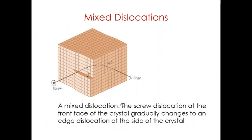Next we will discuss mixed dislocations. As shown in the figure, the screw dislocation Burgers vector is parallel to the screw dislocation line, while the Burgers vector for the edge dislocation is perpendicular to the extra half-plane of atoms or edge dislocation line. Mixed dislocations have both edge and screw components with a transition region between them; however, the Burgers vector remains the same for all portions of the mixed dislocation.